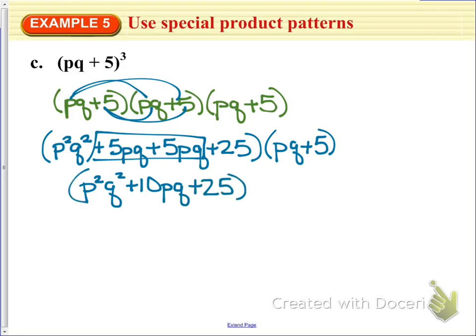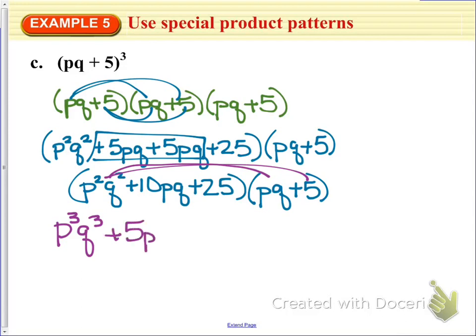And then I'm going to multiply the trinomial times the binomial here. So I'm going to go ahead and multiply p squared q squared times pq gives me p to the third and q to the third. And then I get plus 5p squared q squared. My second term is 10pq. So that will end up being 10p squared q squared.